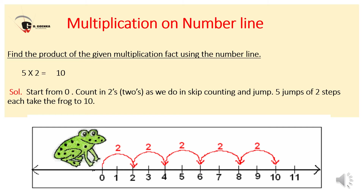Multiplication on a number line. Find the product of a multiplication fact using the number line. Here you can see a number line starting from 0 to 11, and froggie is sitting on number 0 and wants to reach number 10, because our sum is 5 multiplied by 2. Froggie takes 5 jumps by skipping 2 numbers. Starting from 0, count in 2's as in skip counting and jump. Five jumps of 2 steps each take froggie to 10, which means 5 multiplied by 2 equals 10, or 5 times 2 equals 10.